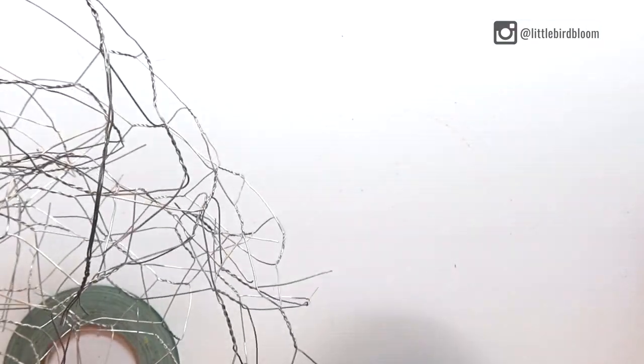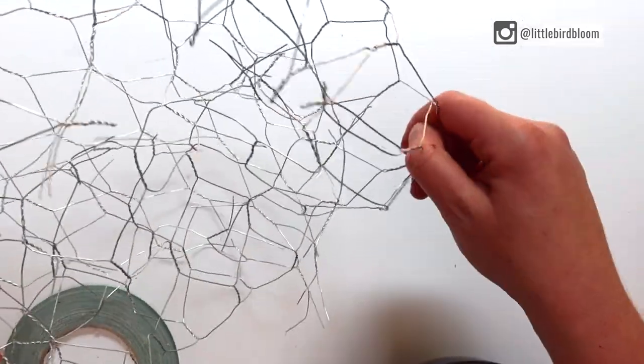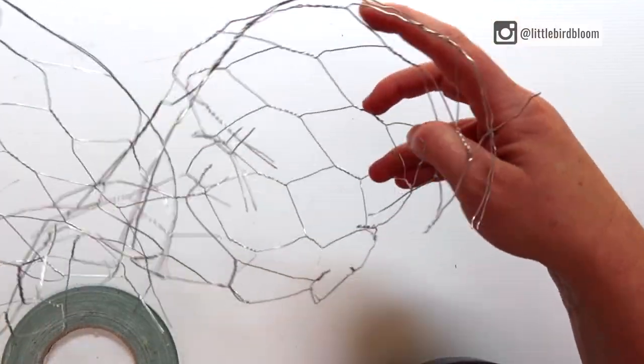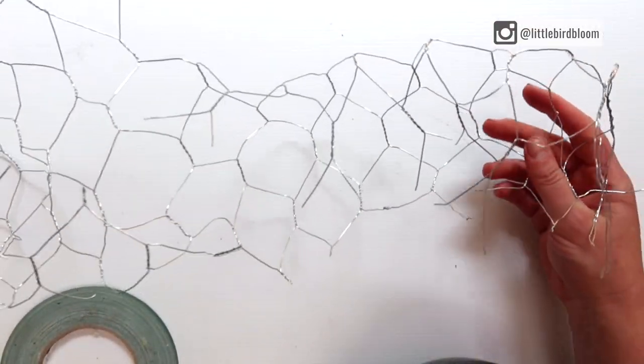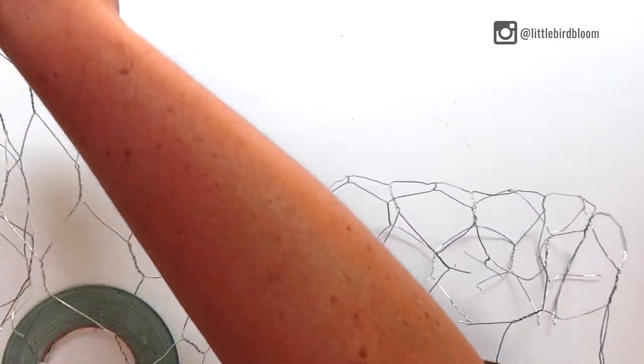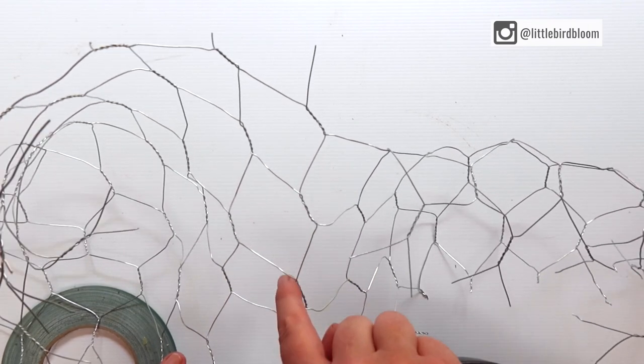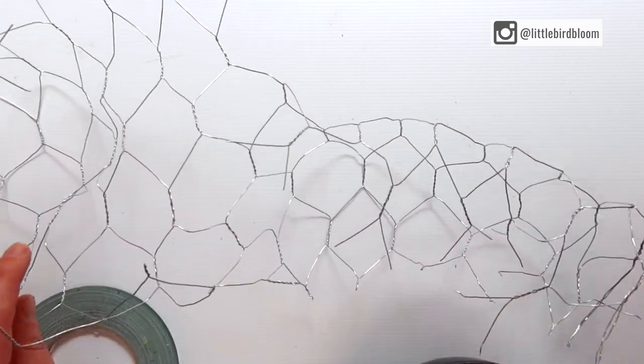The biggest question I get asked when it comes to basing up your containers is how much chicken wire. When it comes to us and our design style, my preference is that we actually have multiple layers of chicken wire. So that's why I like to use the chicken wire that has the bigger holes in it. This is the five centimeter diameter chicken wire.